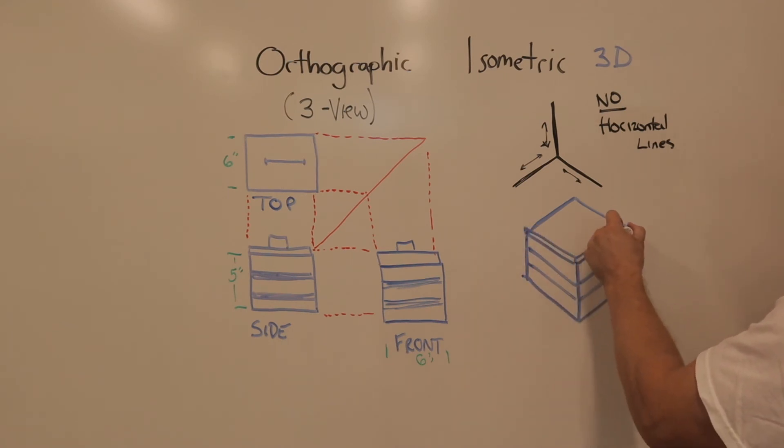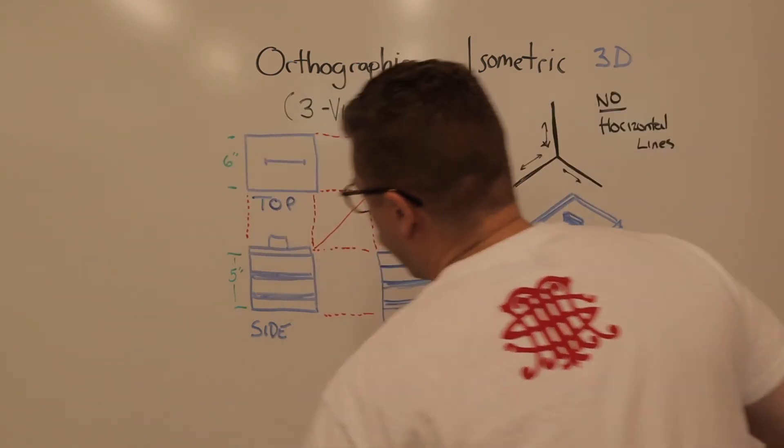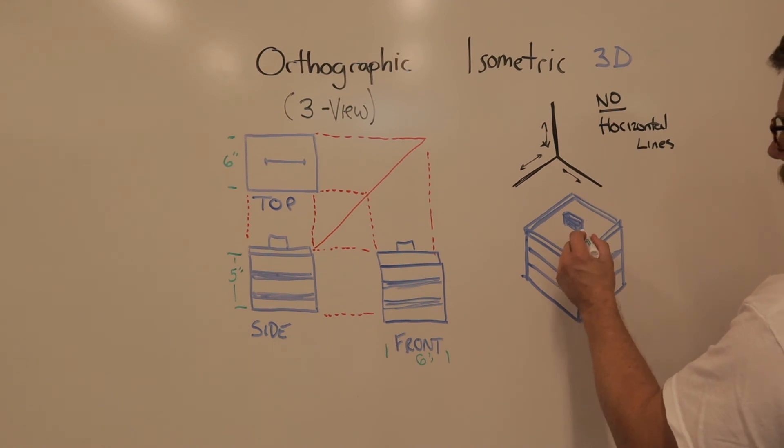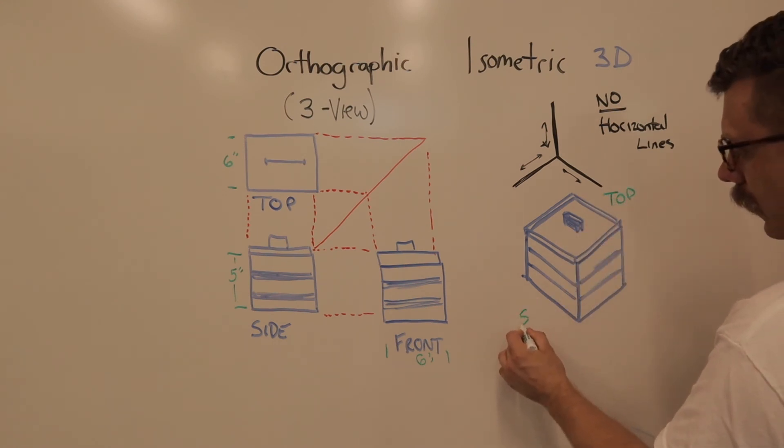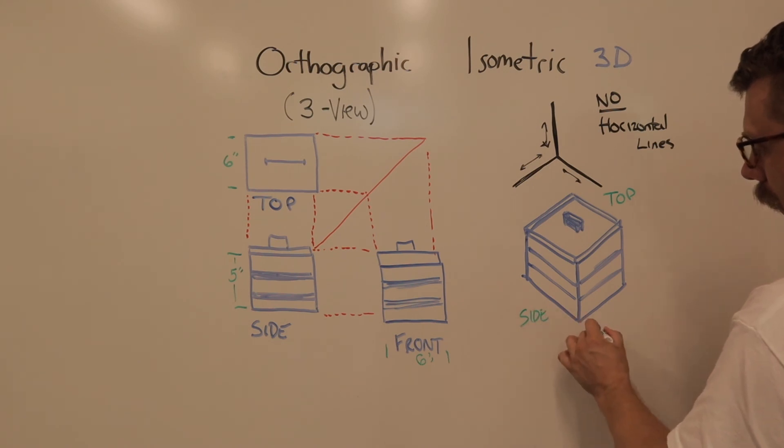Maybe this is the lid. And then there's my little handle. And that's your isometric drawing. So, when you label this, when you look at it, you can see that this is the top, this is the side, and this is the front.